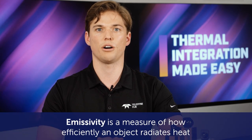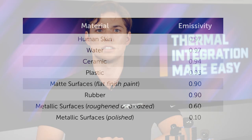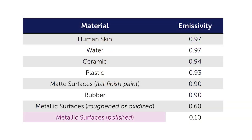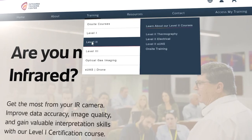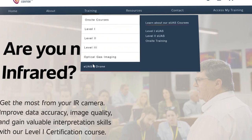Radiometric accuracy is affected by the characteristics of objects being measured, the environment, and the camera. Emissivity is a measure of how efficiently an object radiates heat. Highly polished metallic surfaces will have a lower emissivity of about 0.10, matte surfaces are around 0.90, while human skin and water are about 0.97. Objects must have a high emissivity to be measured properly, so make sure your test targets have a high emissivity value. You can learn more about emissivity at our website and through training with the Infrared Training Center at infraredtraining.com.